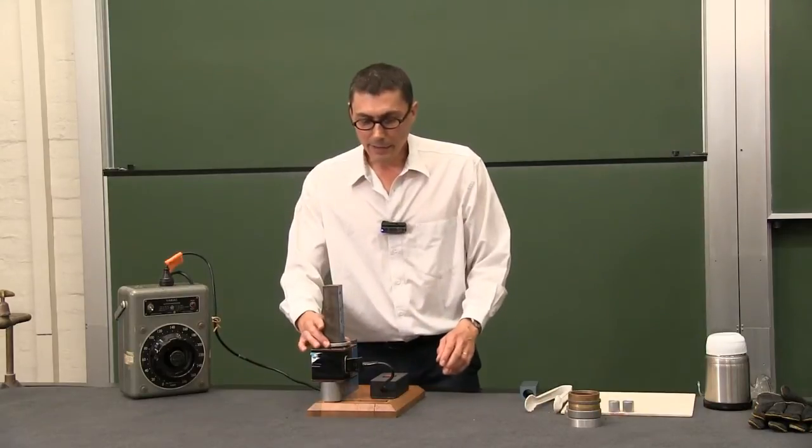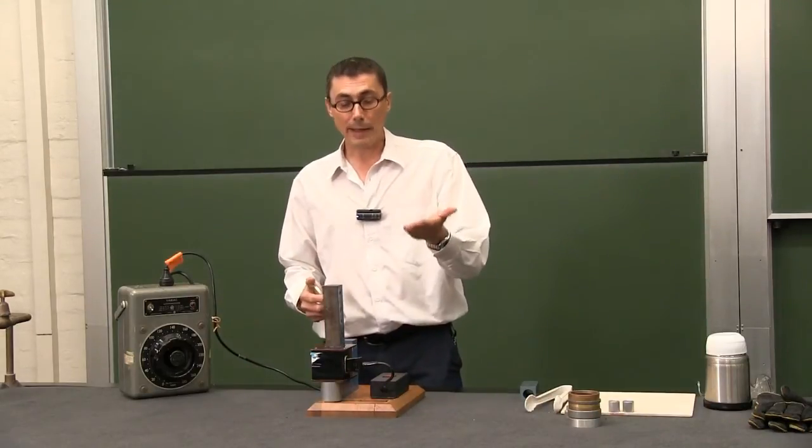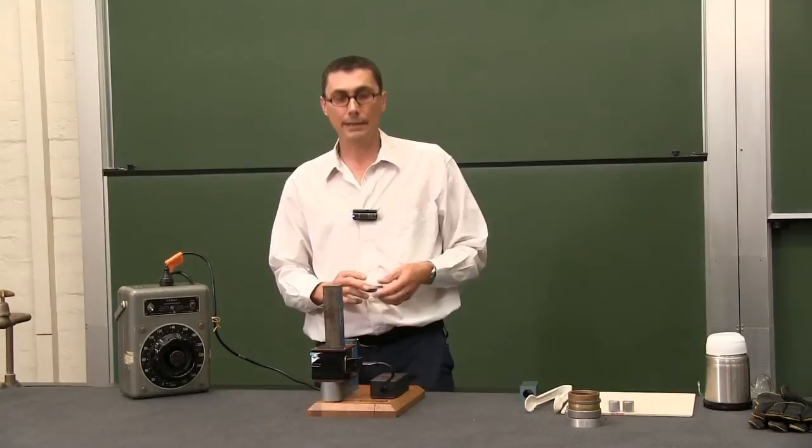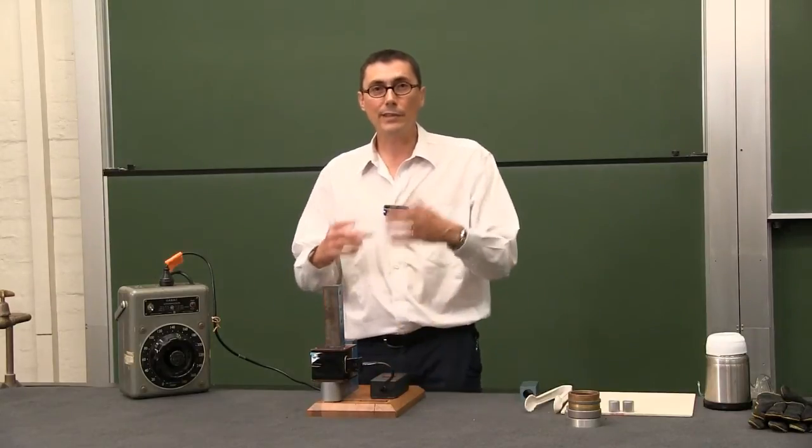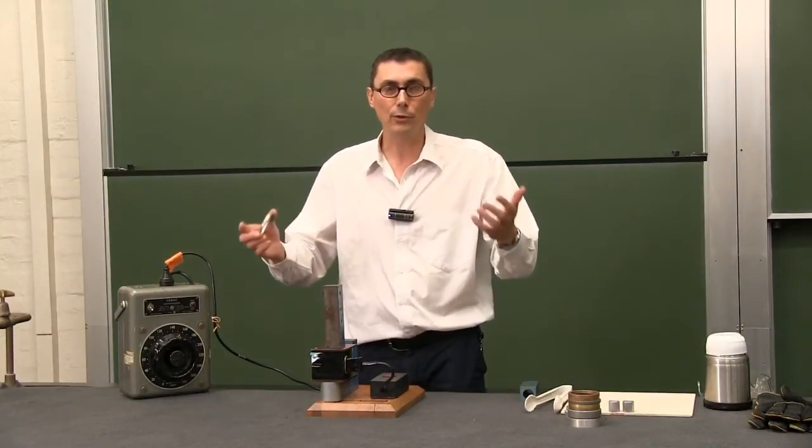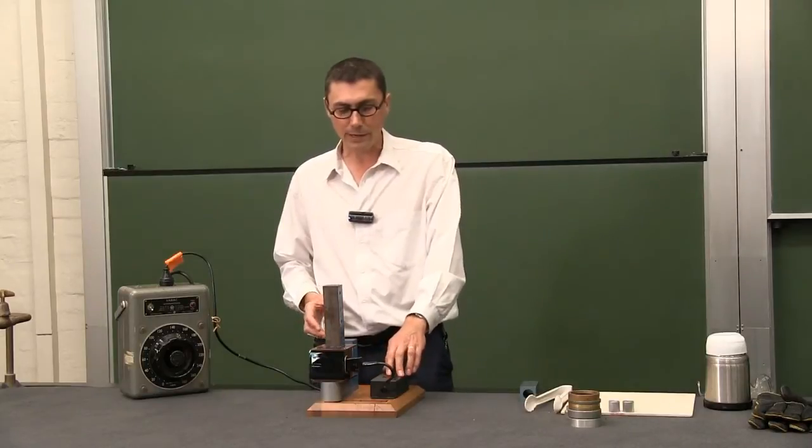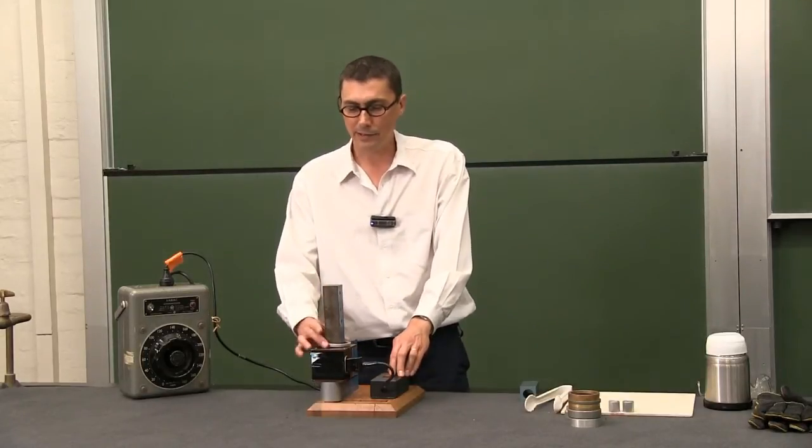Now in the first instance remember I talked about this sudden increase in the magnetic field. Now when you have a sudden increase in something scientists call that a transient. So we have what's called a transient increase in the magnetic field.